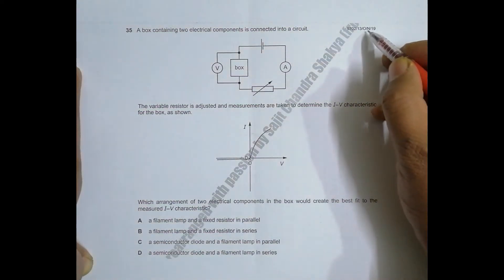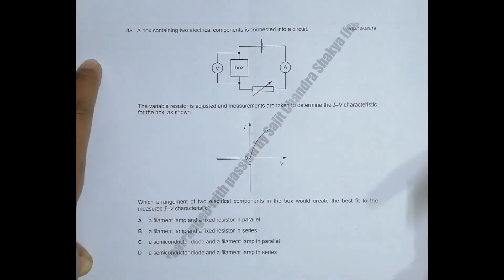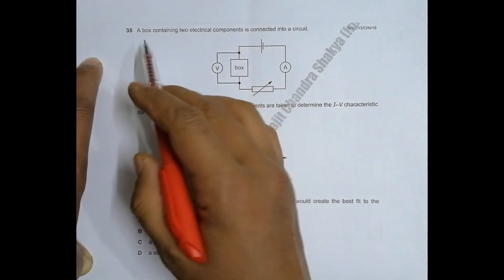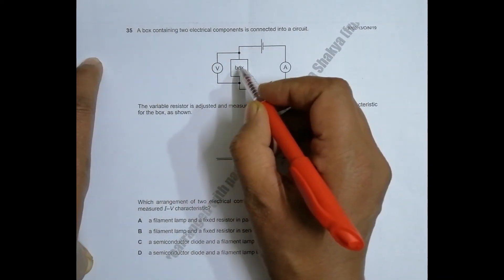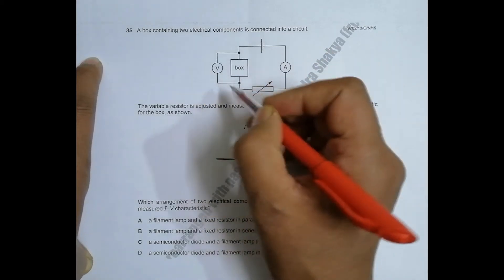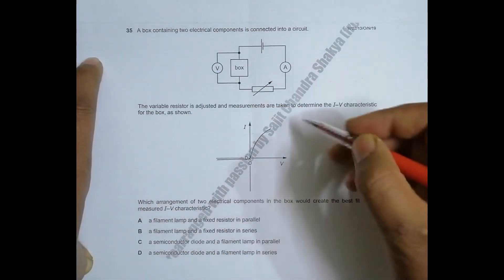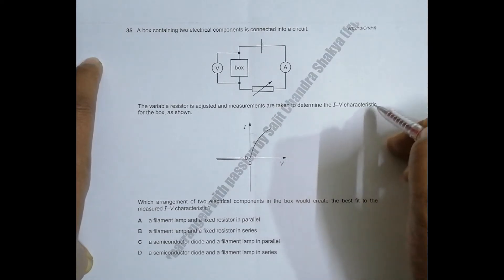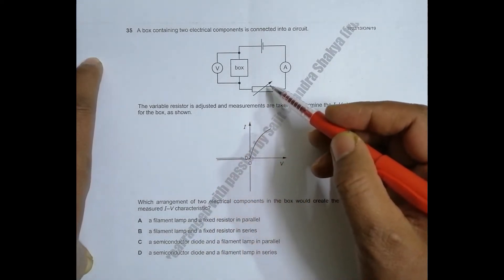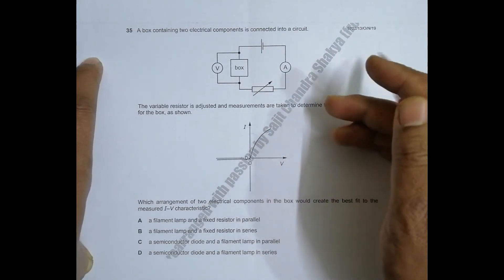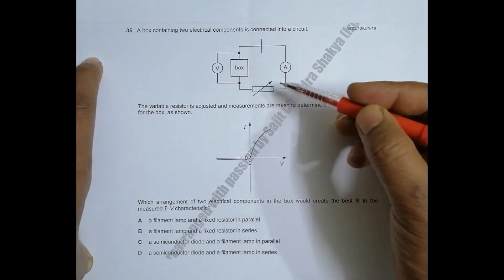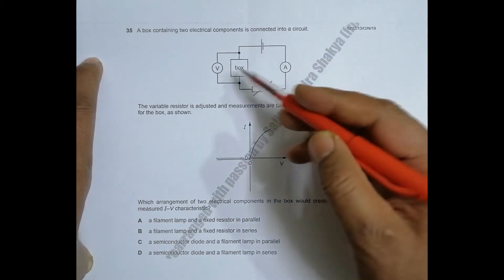Hello folks, this is 2019 October/November Paper 13, Question 35. The question is concerned with the chapter current electricity. It says that a box containing two electrical components is connected into a circuit. The variable resistor is adjusted and measurements are taken to determine the IV characteristic for the box. When we adjust this resistor, the PD changes and the current also changes.